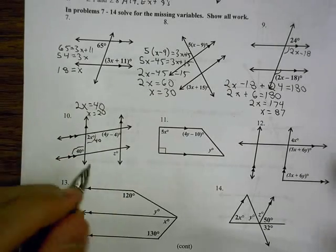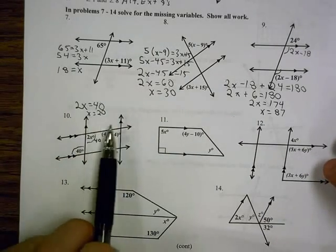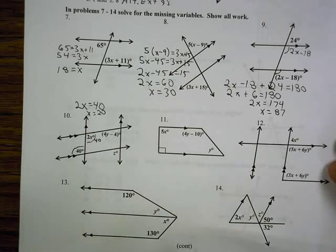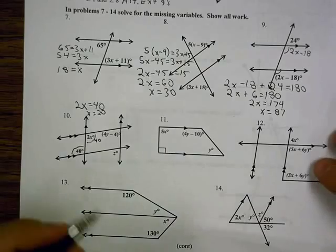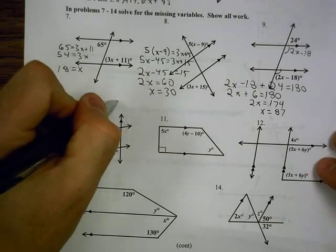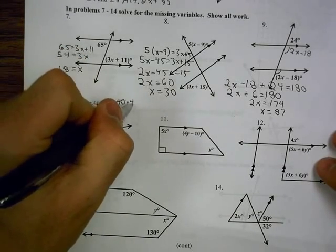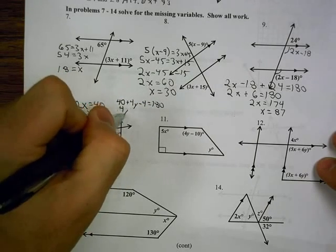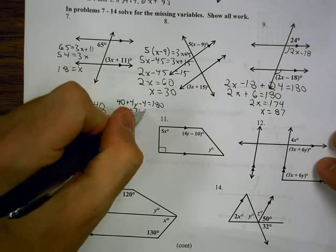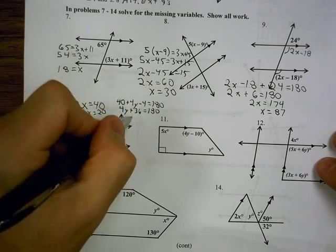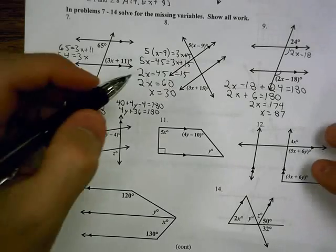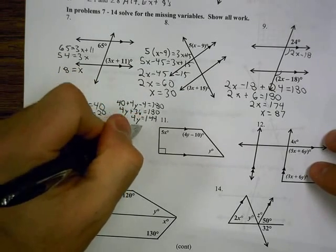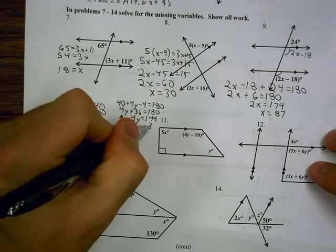I know that angle is 40 as well, and that helps me because then I can look at these parallel lines and this transversal to see that 40 and 4y minus 4 are consecutive interior, so they would be supplementary. So 40 plus 4y minus 4 equals 180. 4y plus 36 equals 180. I subtract 36 from both sides, and I get 4y equals 144, so y is 36.